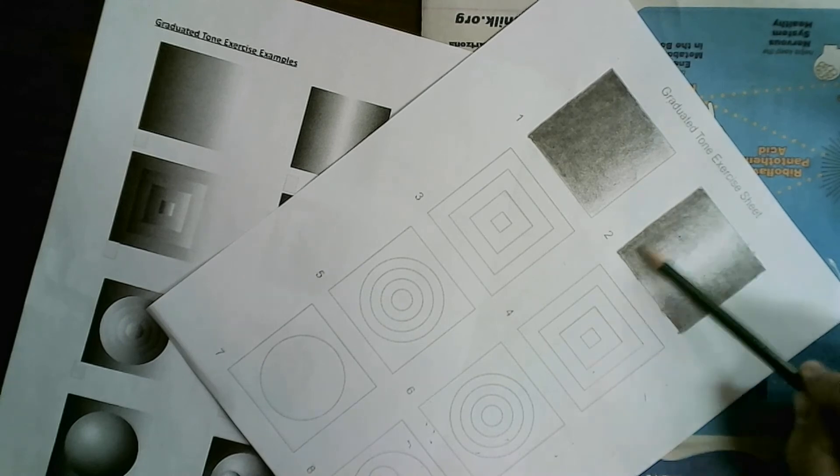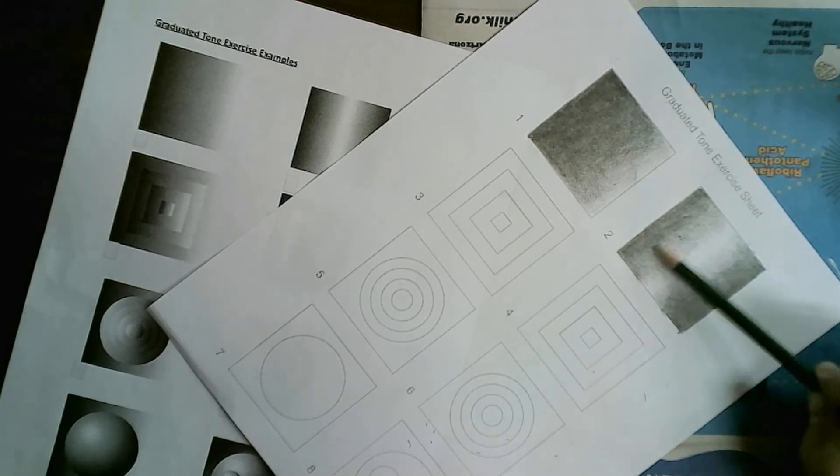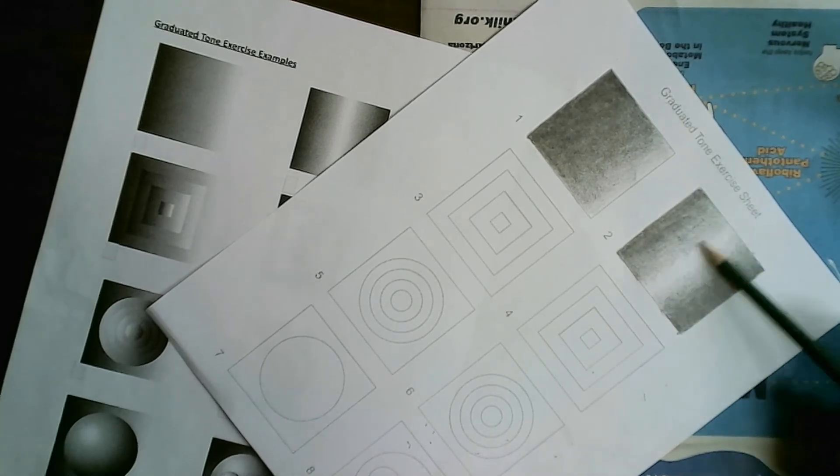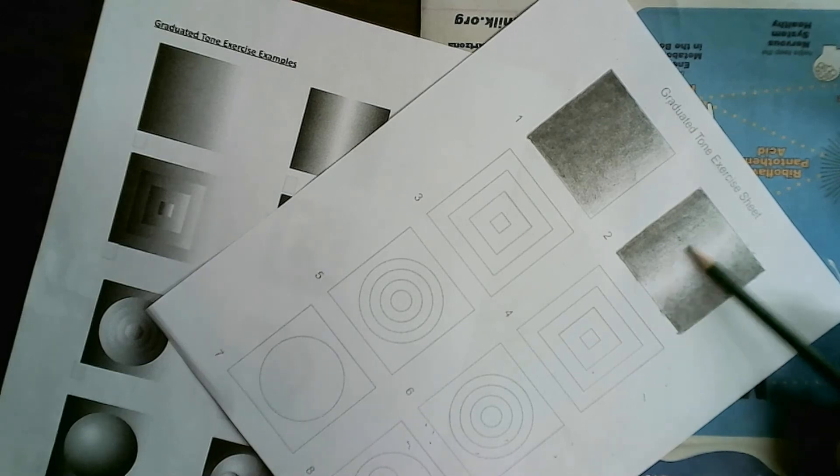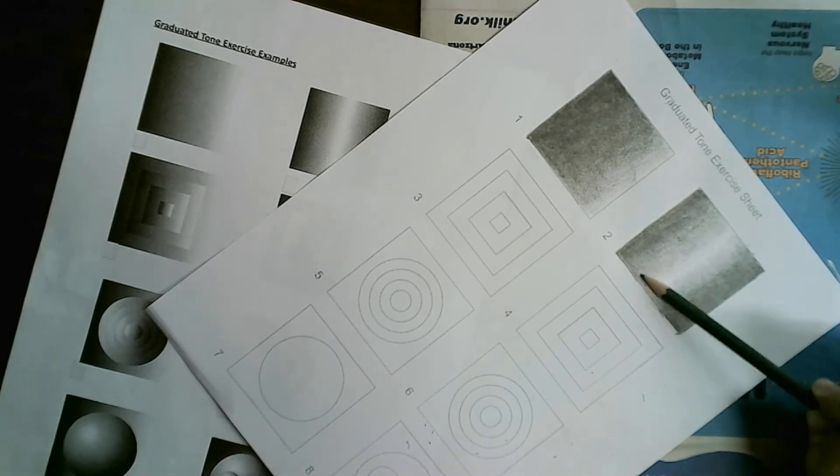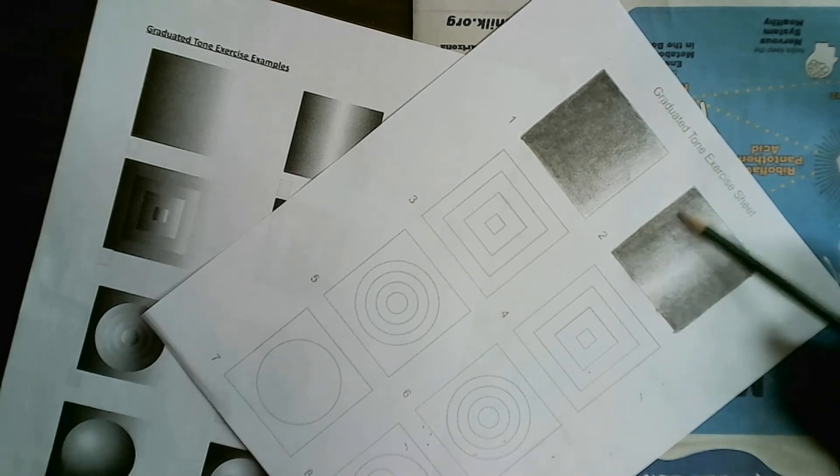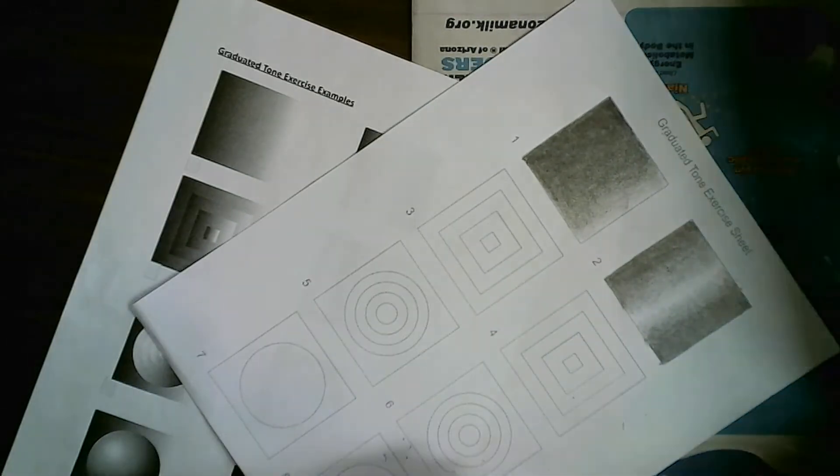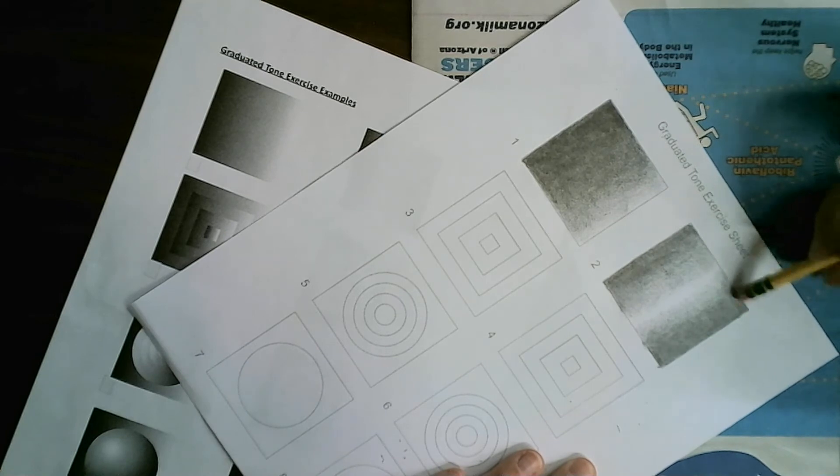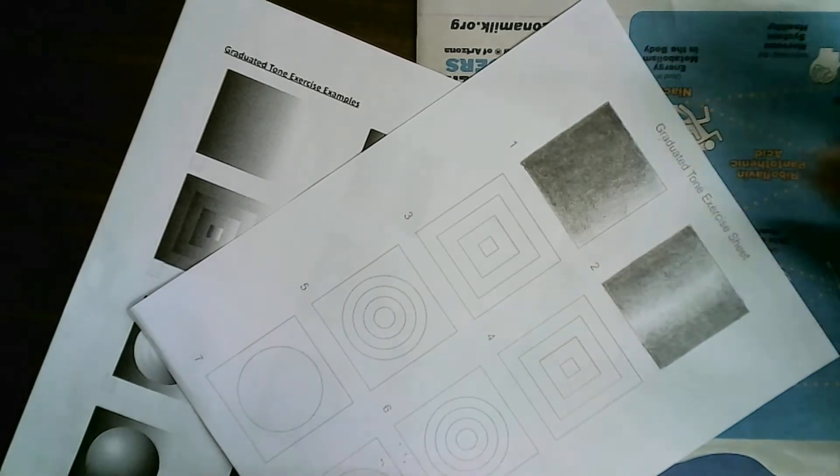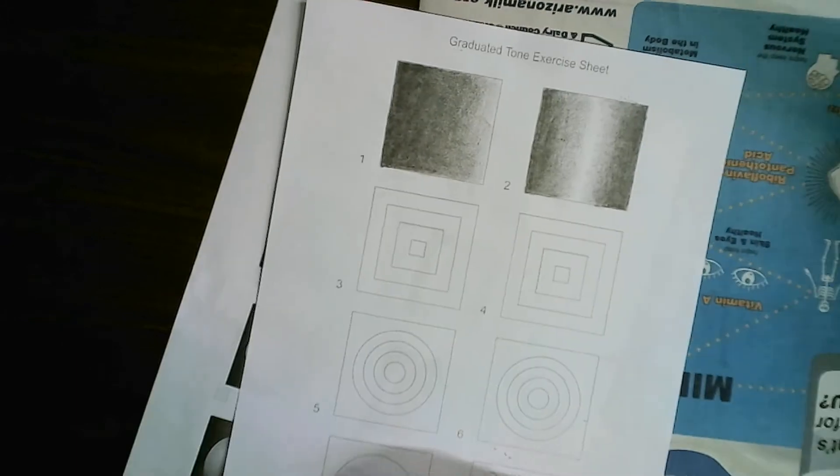This is an exercise in pressure. Because with shading, whether you're shading with colored pencil, graphite, later on if you take art 3, 4, maybe charcoal, pastel, even painting sometimes, it's all about artist pressure to get the effect that you want. So this is what we're practicing. It's probably the thing that takes the longest to develop too.